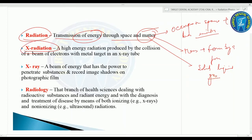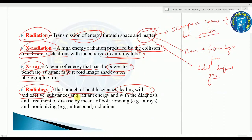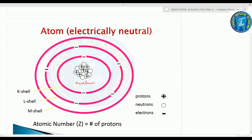X-radiation means high energy radiation produced by the collision of a beam of electrons with a metal target in an X-ray tube. X-rays are a beam of energy with the power to penetrate substances and record image shadows on a photographic film. Radiology is the branch of health science dealing with radioactive substances and radiant energy for diagnosis and treatment using both ionizing (X-ray) and non-ionizing (ultrasound) radiations.